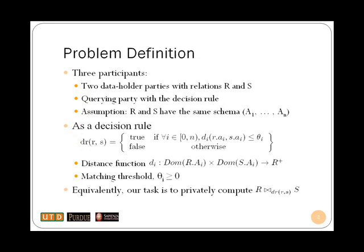Our problem definition consists of three participants. There are two data holder parties with relations R and S, and the querying party that provides the decision rule. We assume that schemas of R and S are matched prior to the record linkage process. Given distance functions di and matching thresholds theta i for each attribute ai, the decision rule matches two records if they are less than theta i-distant on all attributes. Otherwise, a record pair is set to mismatch. The problem can equivalently be defined as a join of data sets R and S where the selection condition is the decision rule.